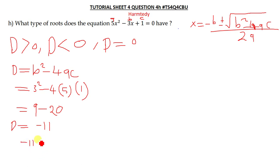Negative 11 is less than zero. So when D is less than zero, then we know that our equation, which is this equation 5x² - 3x + 1 = 0, has no real roots or it has imaginary roots.